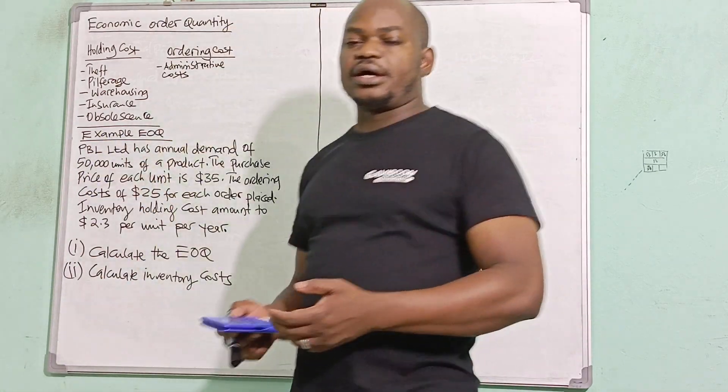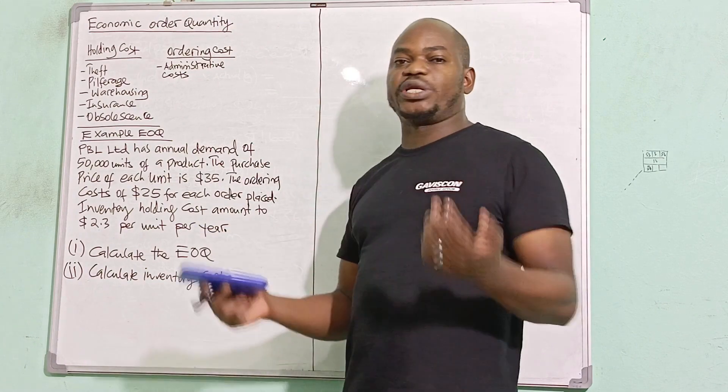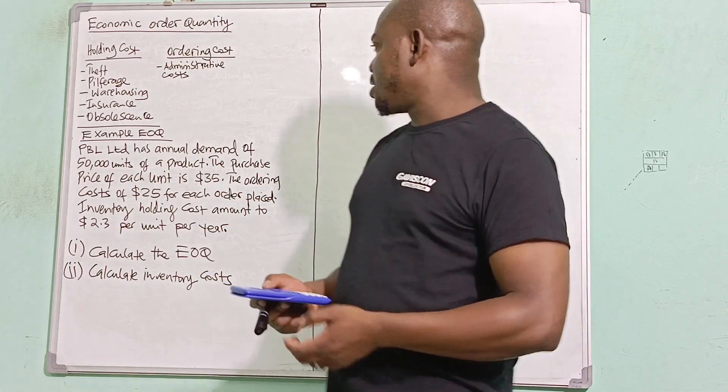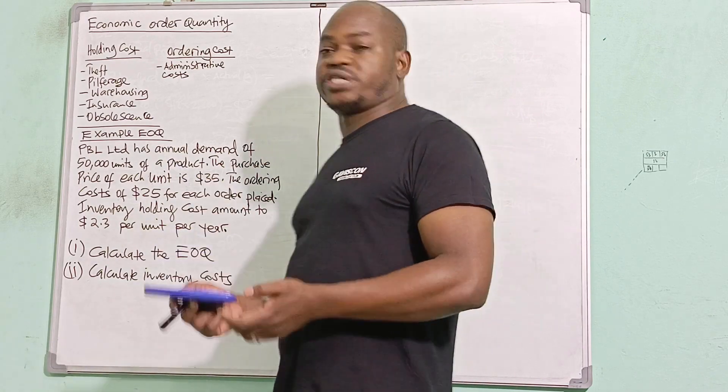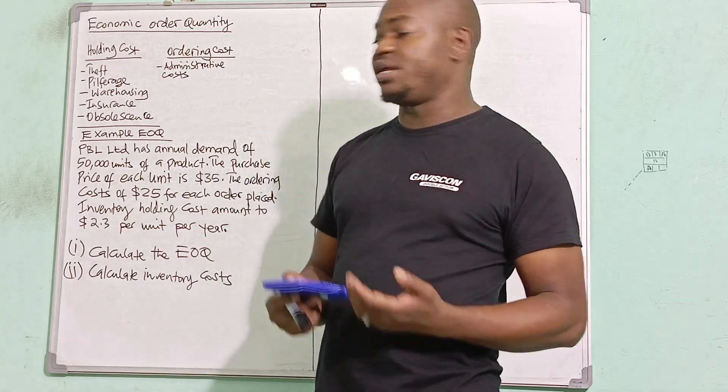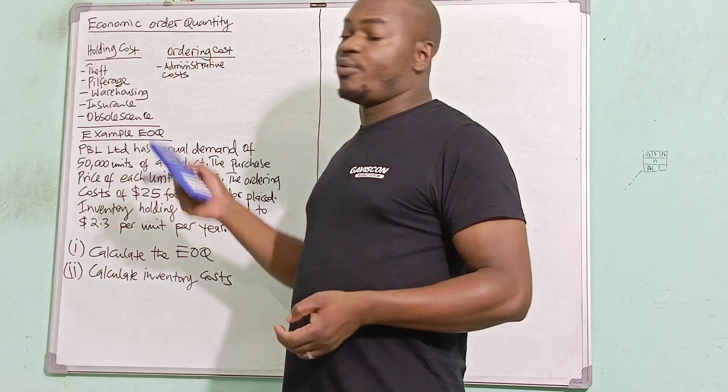Obsolescence—something becomes obsolete, they become out of use. Maybe I can use this which is normally with expiring. Some goods expire because we are holding them in inventory, and hence we have that cost.